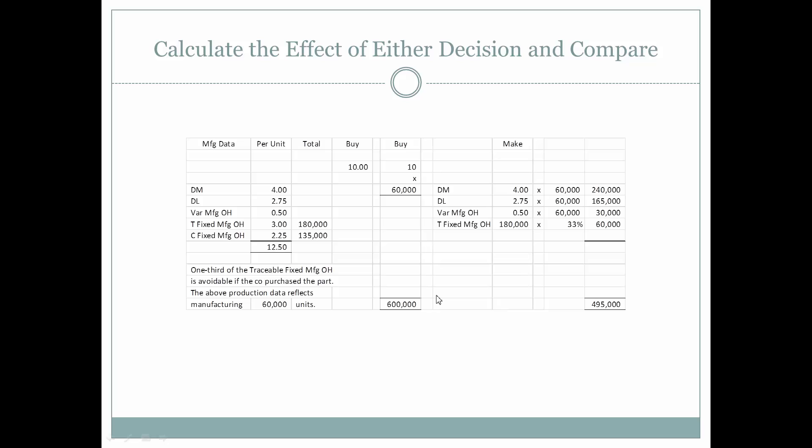How much does it cost us to make that part internally? What are the costs truly associated with making the part? It's going to be the direct materials of $4 per part, plus the direct labor expenses of $2.75 per part, as well as the variable manufacturing overhead of $0.50 per part.